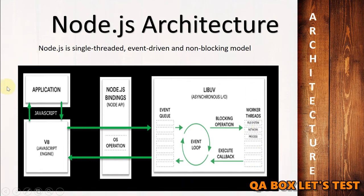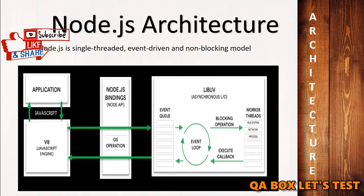So now let's briefly talk about this overall architecture. You have your application, V8 engine, Node.js bindings, then your OS operations. We have the event queue, event loop, libuv, and working threads. Node.js has implemented a non-blocking system in its single-threaded, event-driven model. At the heart of this model lies a component known as the event loop, which continuously listens for incoming requests while running indefinitely on a single thread — it is never blocked. When a request comes, the event loop assigns it to a thread from the internal thread pool to perform the actual operation. On completion, the internal thread sends the response back to the event loop, which in turn sends it back to the client via callbacks.